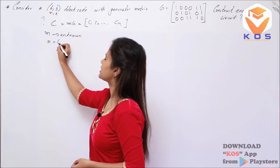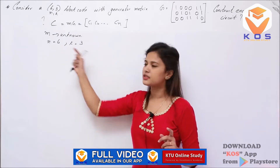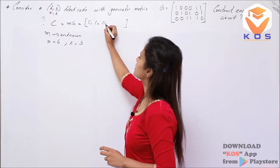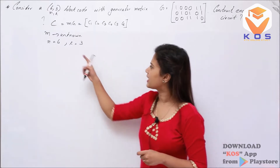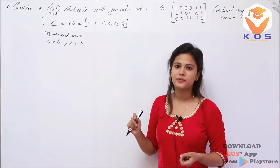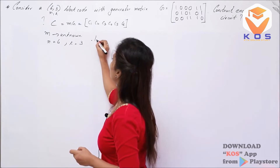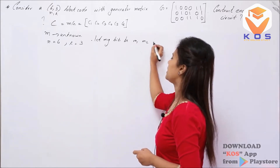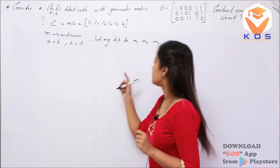N is equal to 6 and K is equal to 3. The length of the entire code word is 6, so the code word has elements C1, C2, C3, C4, C5 and C6. K equals 3 means there are 3 message bits. Let the message bits be M1, M2 and M3.